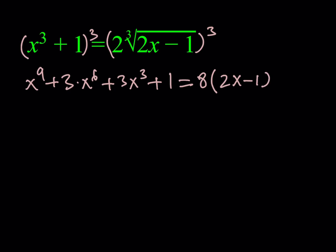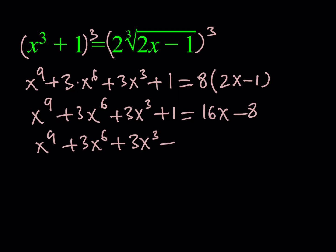Let's go ahead and simplify this and put everything on the same side. I should be getting x to the 9th power plus 3x to the 6th power plus 3x to the 3rd plus 1 equals 16x minus 8. And then let's combine like terms. We can't really combine them because they're all different powers, but we can add 1 plus 8, which gives us 9.